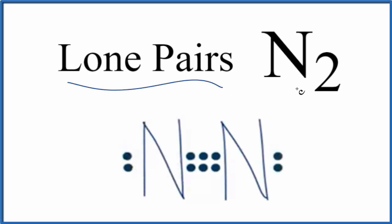Let's find the number of lone pairs for N2. This is diatomic nitrogen, sometimes called nitrogen gas. It makes up 78% of the atmosphere around the Earth.